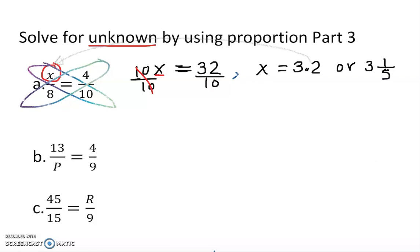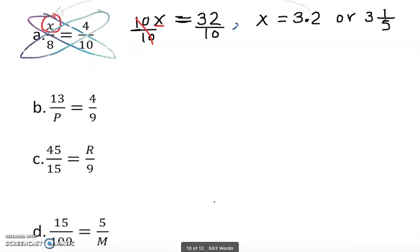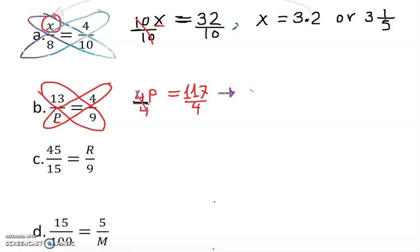Let's do the next problem. I clearly see P is my variable. I can do this variable first because our goal is to get the variable on one side. We have 4P, and we do cross multiply here. 4P equal to 13 times 9 is 117.